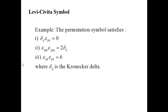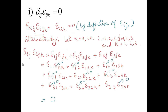Just like the Kronecker delta symbol, the permutation symbol satisfies certain identities, which we will prove one by one. The first identity is: delta_ij times epsilon_ijk equals zero.